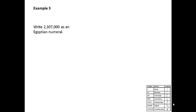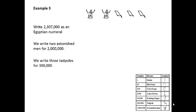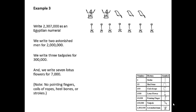Third example: we want to write two million three hundred and seven thousand as an Egyptian numeral. For two million that would be two astonished men. For three hundred thousand that's going to be three tadpoles. There are no ten thousands, so there are no pointing fingers. For seven thousand we'll have seven lotus flowers, and that's all — we don't have any coils of rope, heel bones, or strokes.